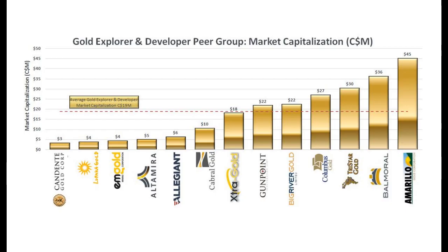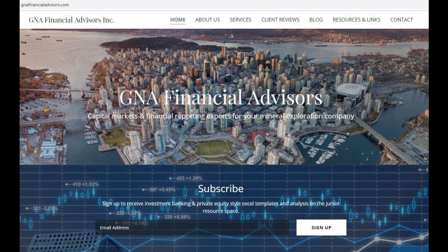Behind me is a peer group of gold explorers and developers that we've selected that have less than 50 million in market capitalization and less than 2.5 million ounces in gold resources — those were our parameters to select this peer group. If you would like to use this template for your own analysis, simply go to our website at gnafinancialadvisors.com, put your email in, and we'll send over this template so that you can perform your own due diligence on resource stocks.